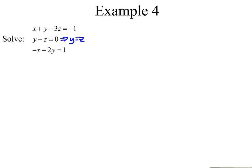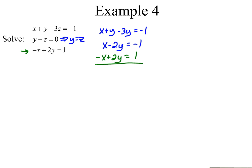Substituting y in place of z into the top equation, we get x plus y minus 3y equals negative 1. Simplifying, we get x minus 2y equals negative 1. Now we have a second equation in terms of x and y, which we can use together with the bottom equation that's already in terms of x and y, and they're set up nicely for elimination. Adding them up, the x's and y's both cancel, and negative 1 plus 1 gives a true statement — so we have infinitely many solutions.